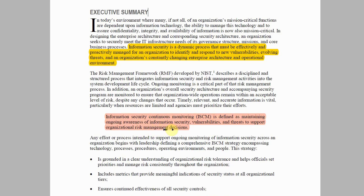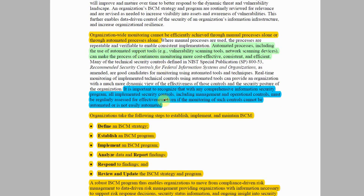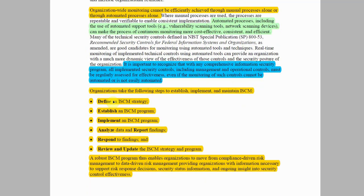Moving along with the executive summary on page 7, it states that organization-wide monitoring cannot be efficiently achieved through manual processes alone or through automated processes alone. Automated processes — including the use of automated support tools such as vulnerability scanning tools and network scanning devices — can make the process of continuous monitoring more cost-effective, consistent, and efficient. It is important to recognize that with any comprehensive information security program, all implemented security controls, including management and operational controls, must be regularly assessed for effectiveness, even if monitoring of such controls cannot be automated.